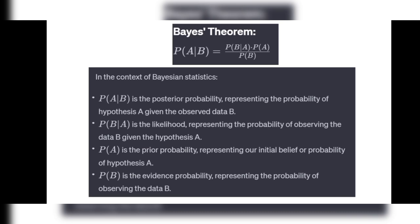In the context of Bayesian statistics: P(A|B) is the posterior probability, representing the probability of hypothesis A given the observed data B. P(B|A) is the likelihood, representing the probability of observing data B given hypothesis A. P(A) is the prior probability, representing our initial belief about hypothesis A. P(B) is the evidence probability, representing the probability of observing the data B.